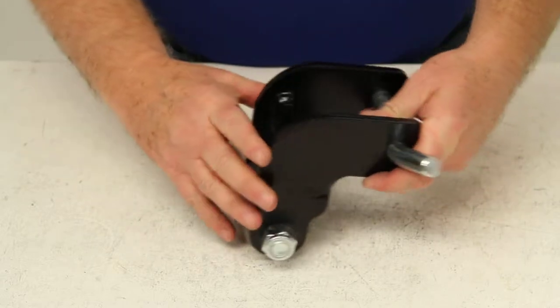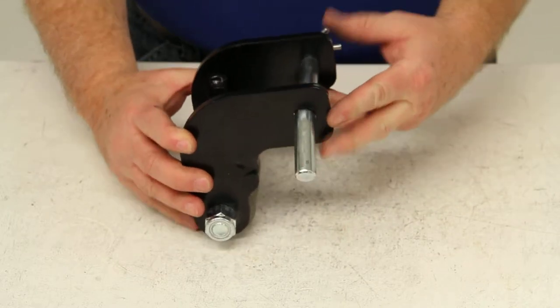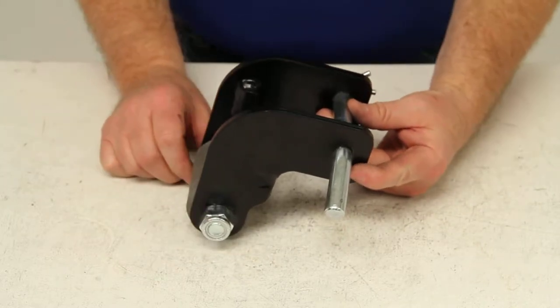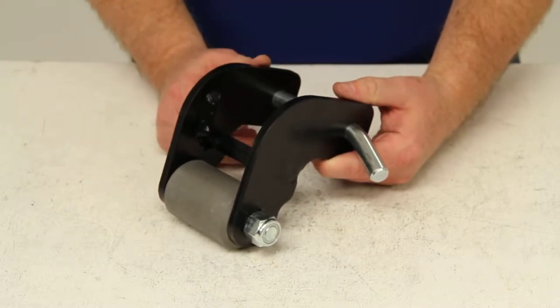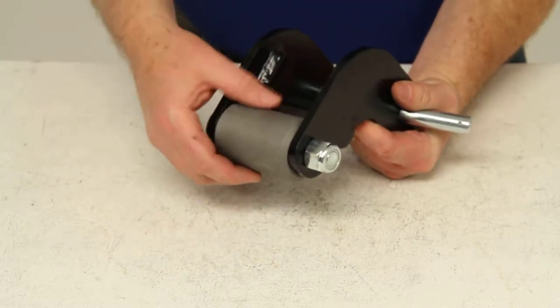It is a front load design which will accommodate many hitches that other rollers will not fit. It is designed for trailer hitches that sit very close to the ground. It has a solid heavy duty steel roller.